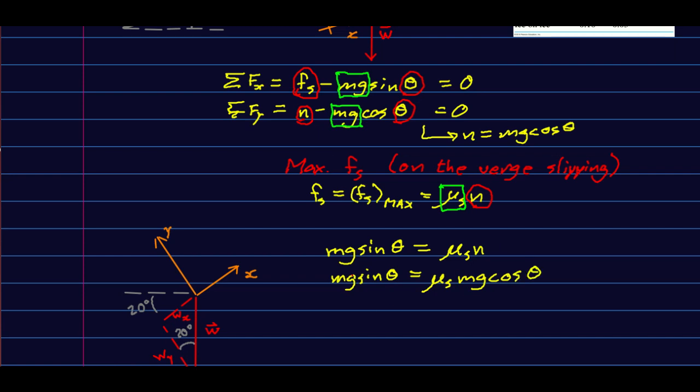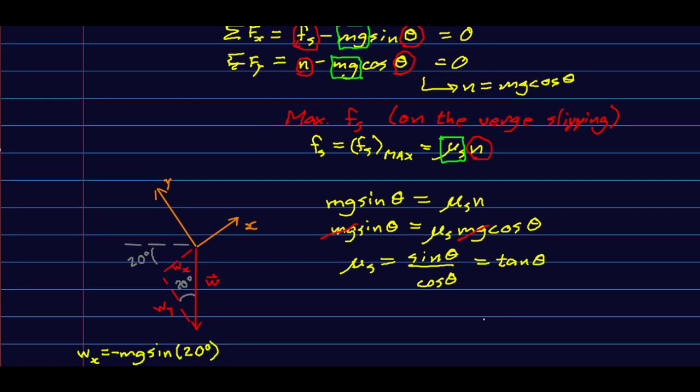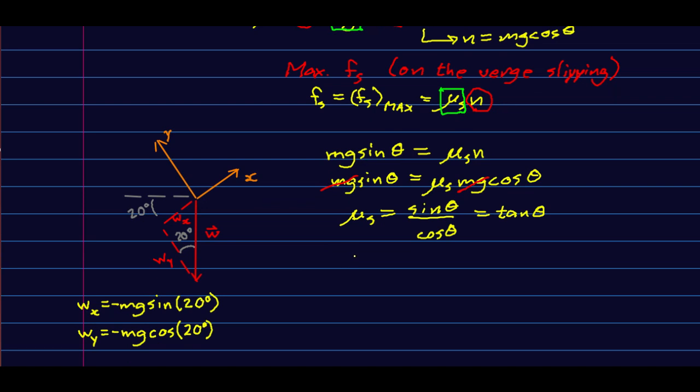And again, I can't solve that yet because n is unknown. But as before, n is just mg cos theta out of the y components. And so now I have mg sin theta is mu s mg cos theta. And a little bit of magic occurs. Look, mg is on both sides. mg can divide both sides by mg, and that's all gone. And so finally solving that, I get that mu s is sin theta divided by cos theta. You may or may not know that's tan of theta.